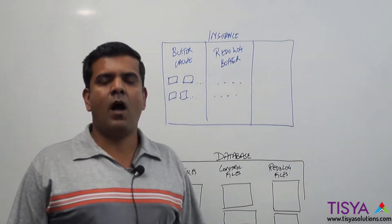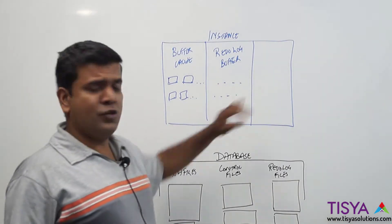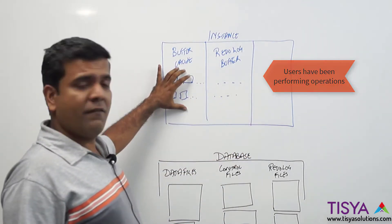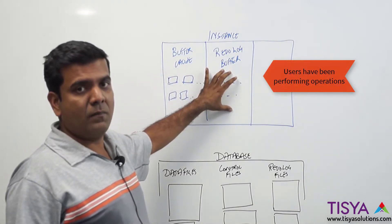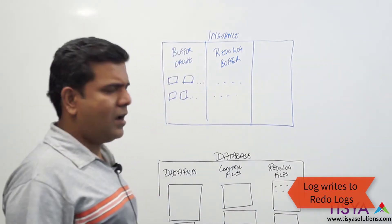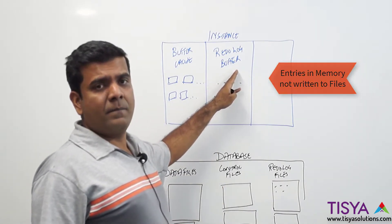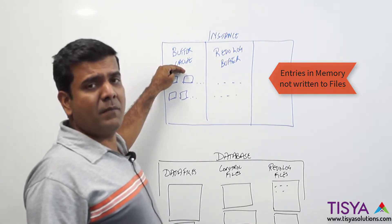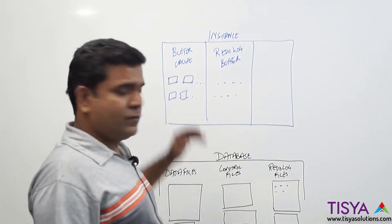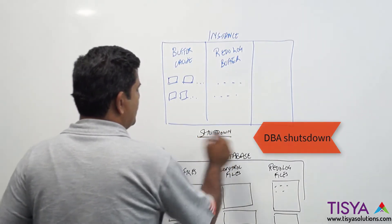In this video I'm going to tell you how an Oracle database shutdown happens. Assuming the instance is already started and users are connected and working with it, changes could have happened in the buffer cache. Entries are made in the redo log buffer, and from time to time the log writer would have written these into the redo log. But still, there could be changes in the buffer cache which are not yet written down into the data file.